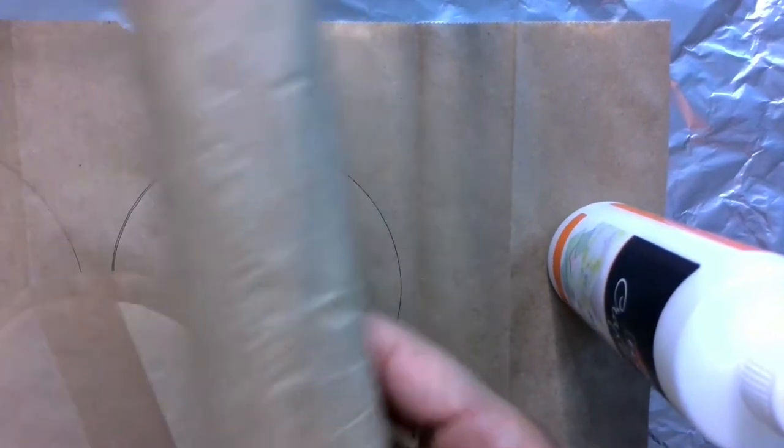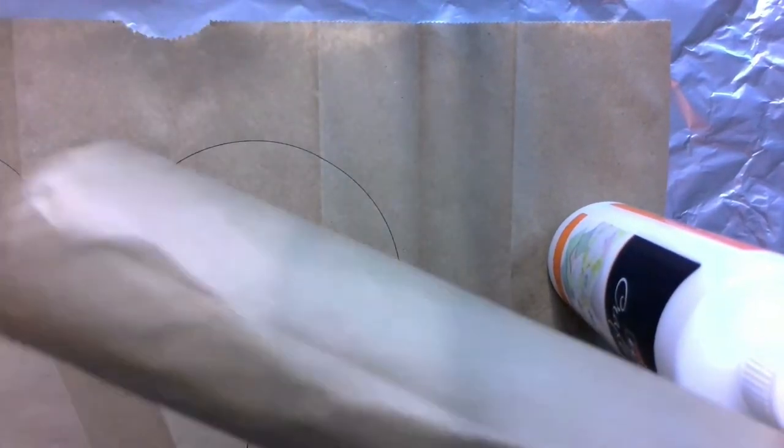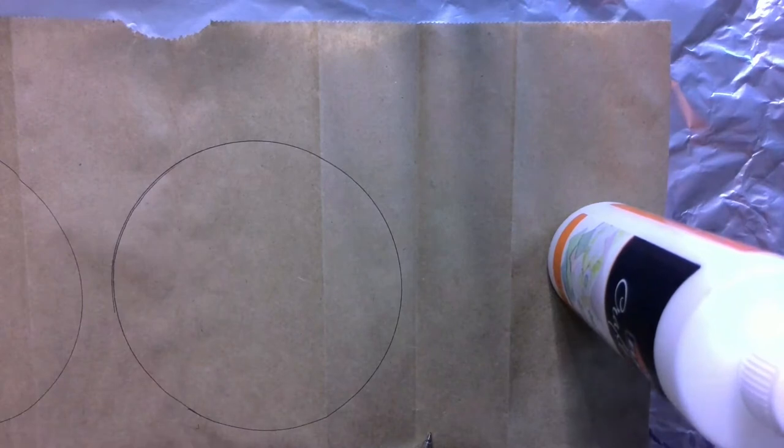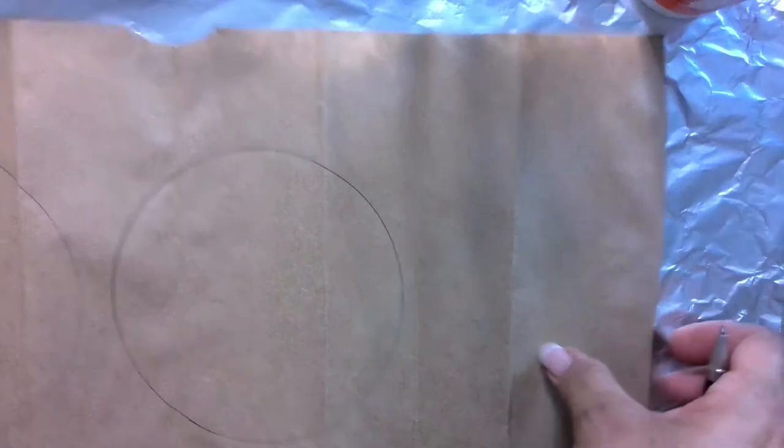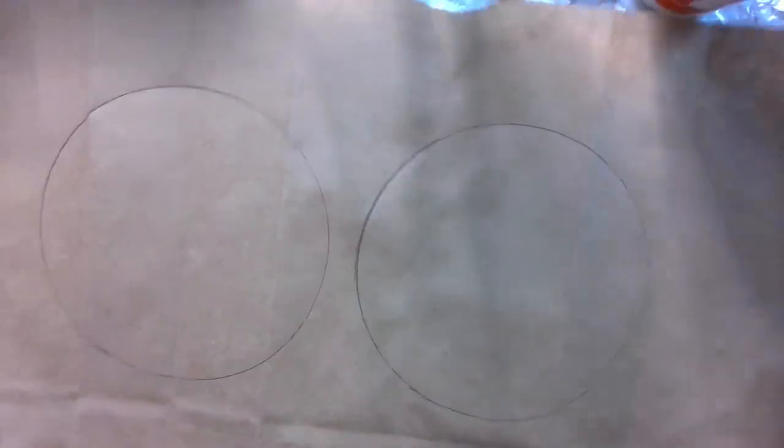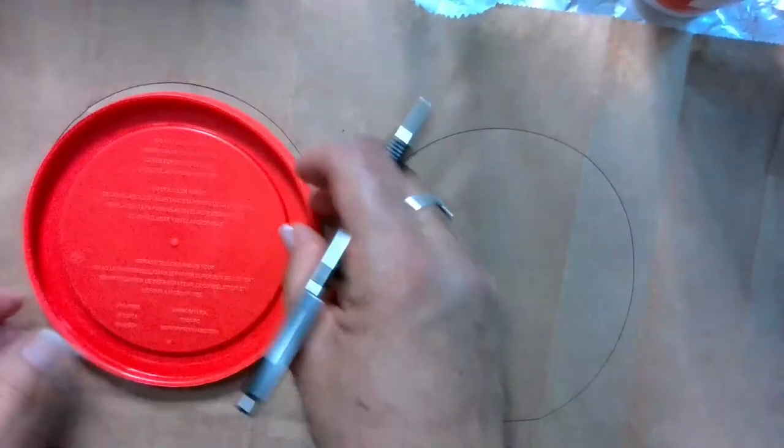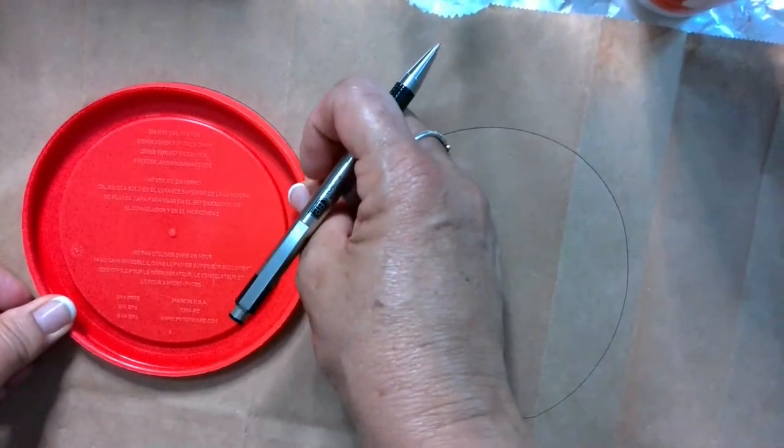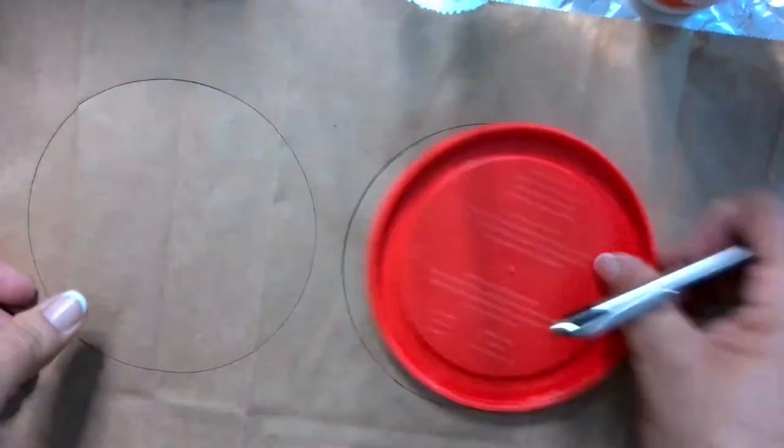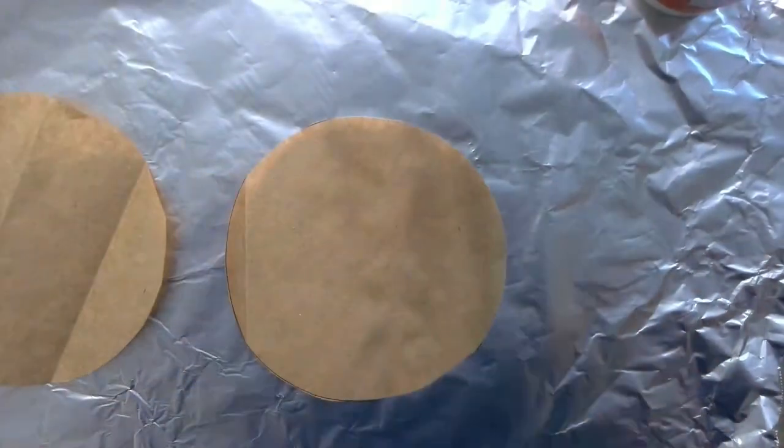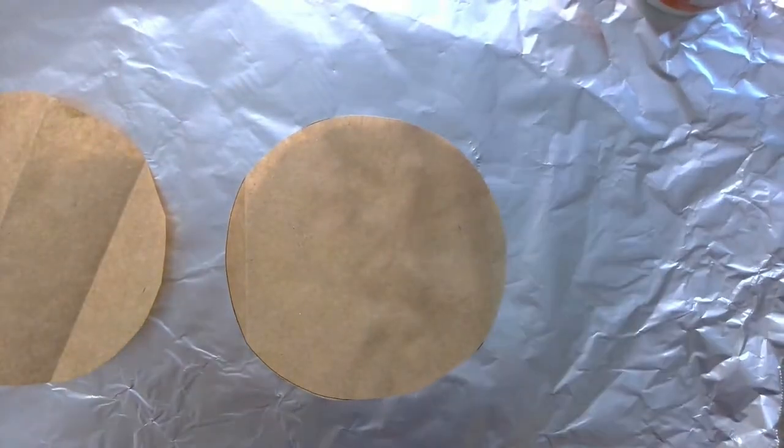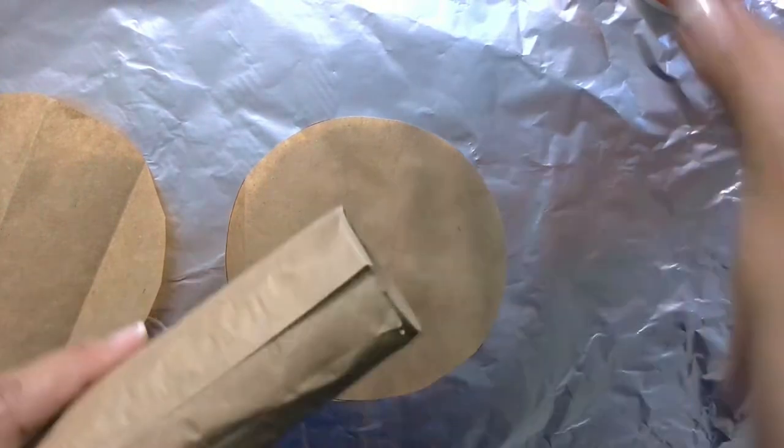So once you have your roll covered, we're going to set it aside and we're going to work on the second sack. This one is already pre-cut because I didn't want to take too much camera time. And this is where you're going to use your round object to trace two circles. Go ahead and cut them off. I have mine pre-cut.